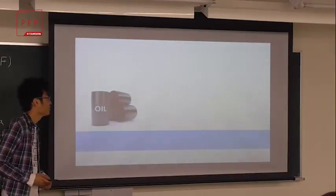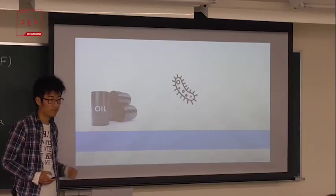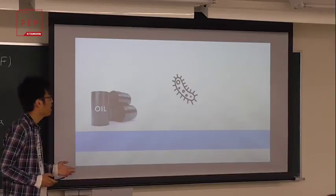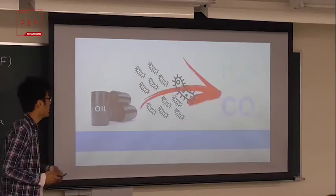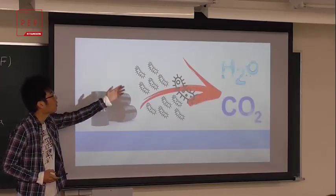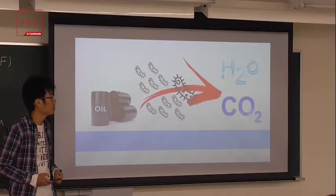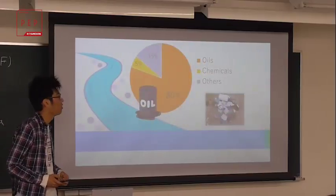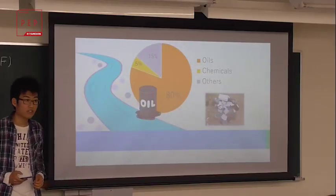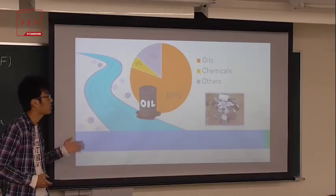In nature, some bacteria can live using oils. Those bacteria are utilized at the maximum, and then they can change oil into water and carbon dioxide in the end. This is really useful, because according to the Japanese government, 80% of water quality accidents in rivers is oil spills. This is really great.